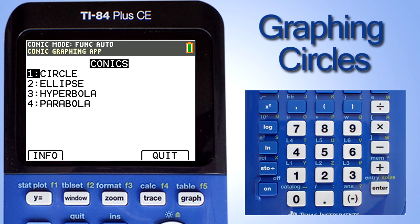The types of conics that you can graph in the Conics app are circles, ellipses, hyperbolas, and parabolas. Go down to number 1, Circle, and press the Enter key.